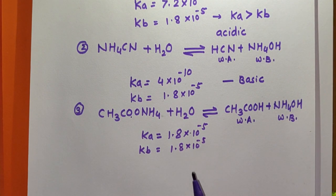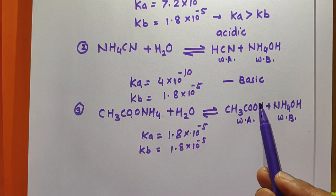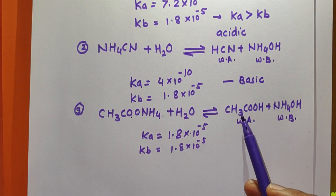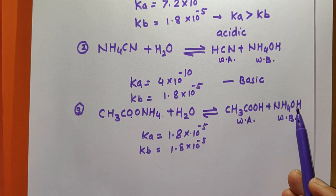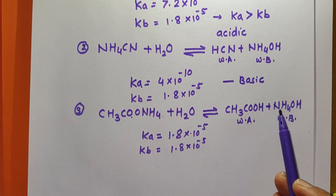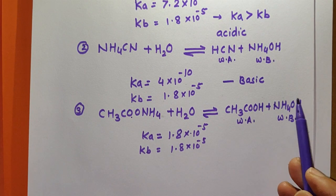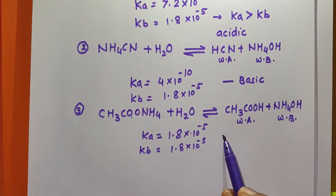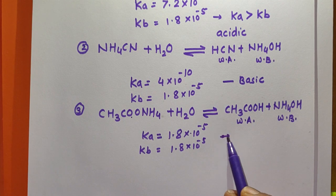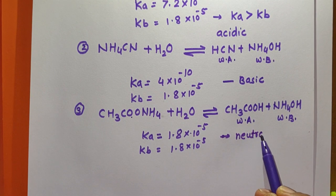The Kb for NH₄OH is also 1.8 × 10⁻⁵. Since Ka equals Kb, the number of H⁺ ions produced from CH₃COOH equals the number of OH⁻ ions from NH₄OH. They combine with each other, making the solution neutral. Therefore, for CH₃COONH₄, the solution is neutral.